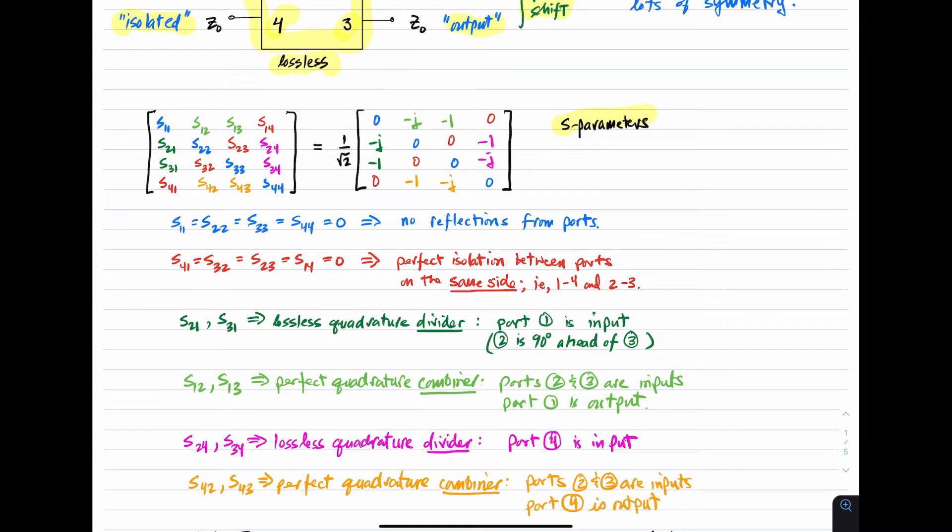The S-parameters S24 and S34 are once again non-zero, equal, and 90 degrees out of phase. So this is once again describing a divider where port four is the input. Ports two and three remain the outputs.